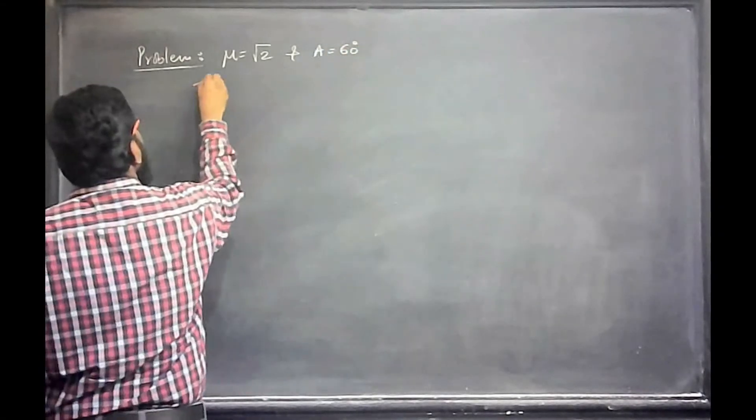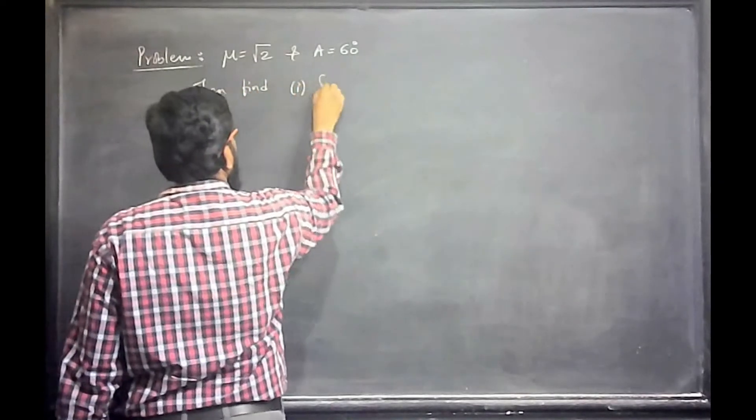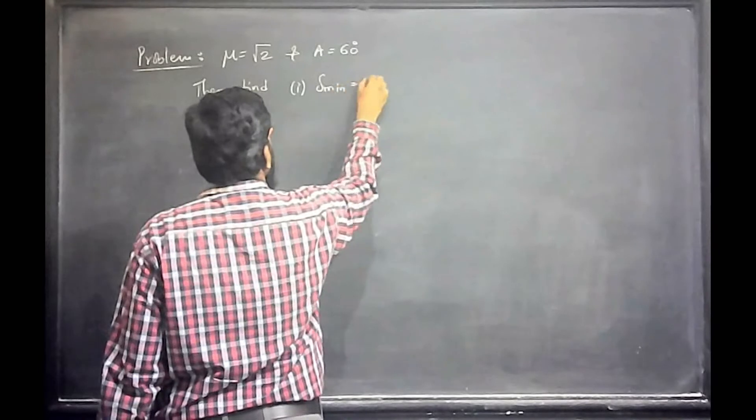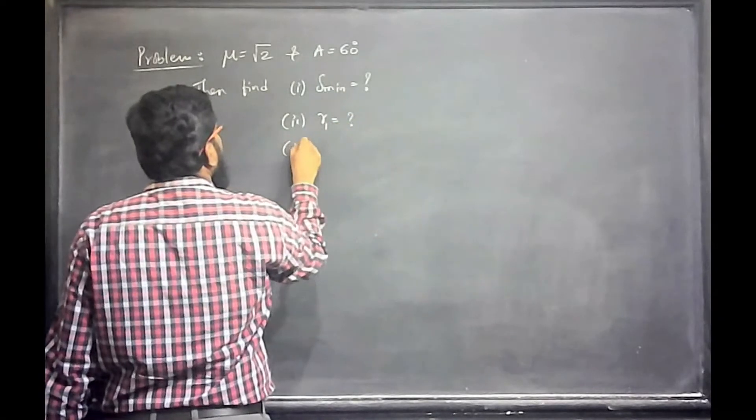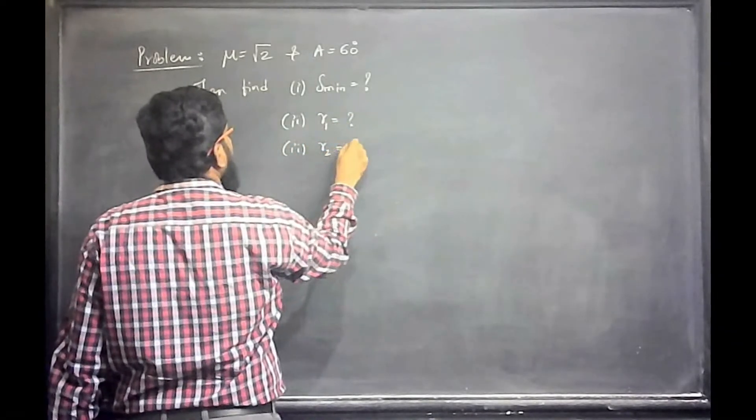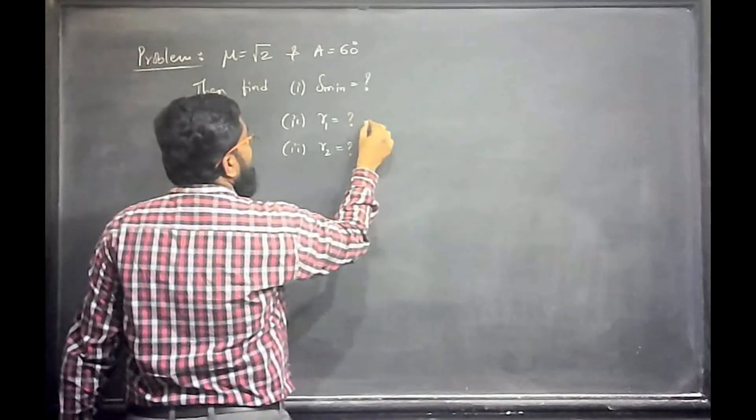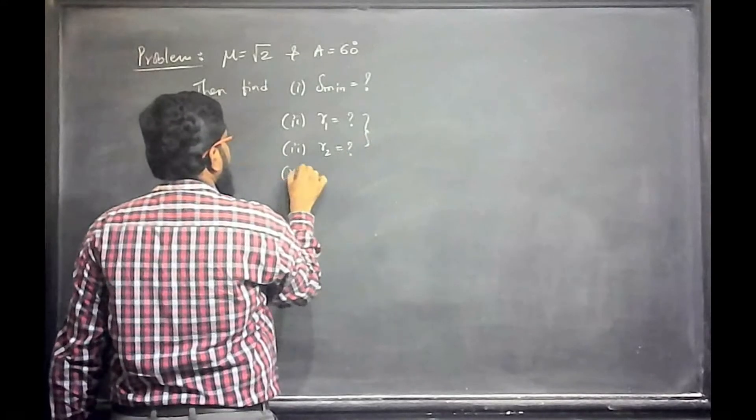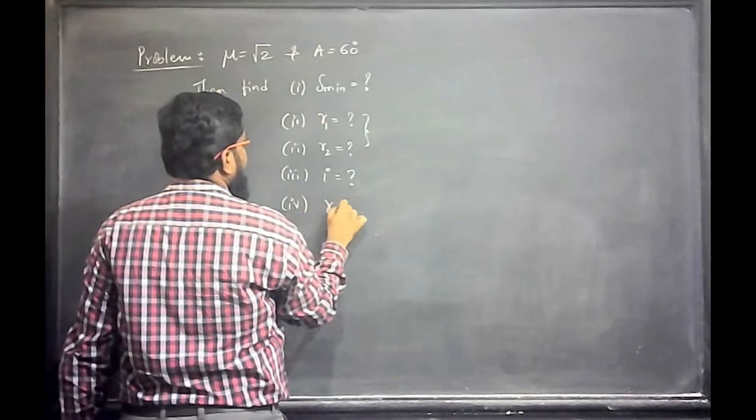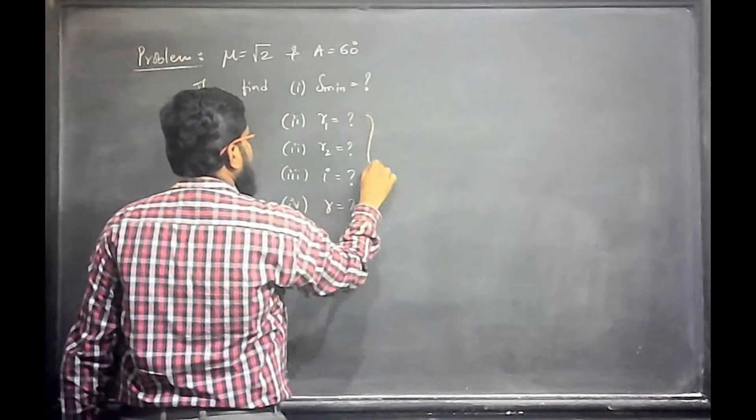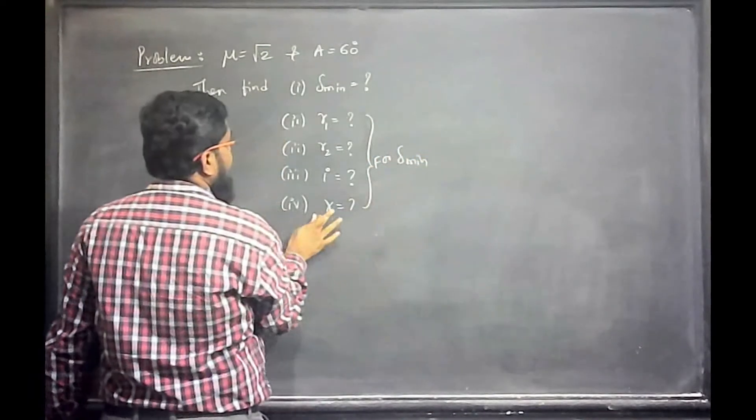Then find: first question will be minimum deviation. Second part R1. R2. What is for minimum deviation? Obviously R1, R2. Next, third one angle of I. Fourth one angle of E for this minimum deviation, for minimum angle of emergence.